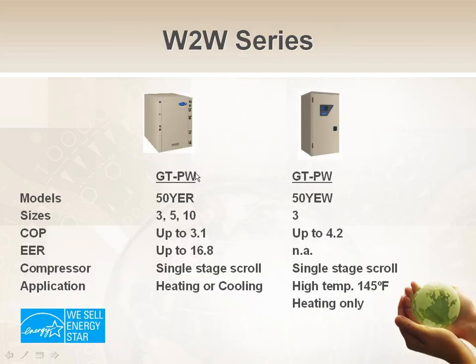Water-to-water units are offered in medium-temperature and high-temperature systems. A medium-temperature system is offered usually in three, five, and ten-ton options residentially, providing anywhere from 120 to 125-degree water — used primarily for radiant in-floor heating. A high-temperature system is usually offered in one smaller residential size and can produce water temperatures up to 145 degrees, used in older homes with hydronic heat and radiators requiring higher-temperature water. More often than not, you'll see the medium-temperature as the predominant water-to-water unit used.